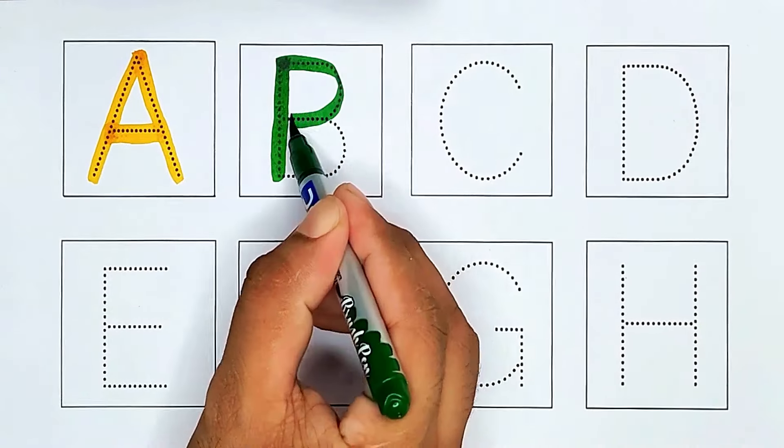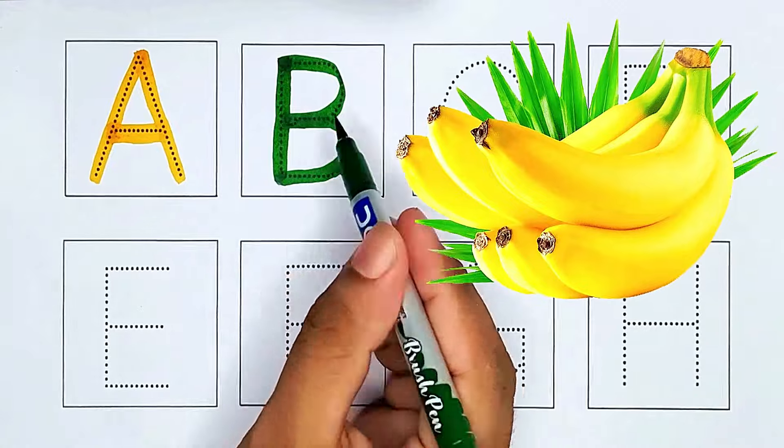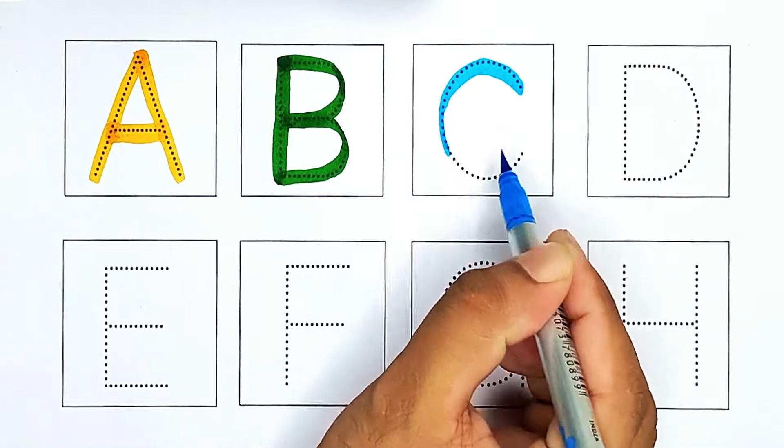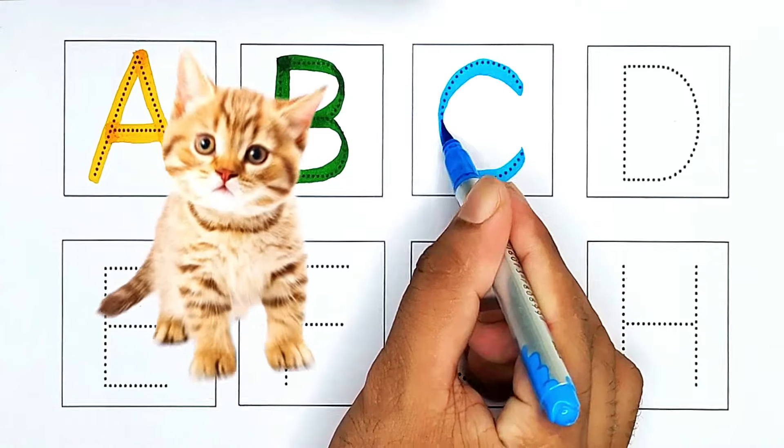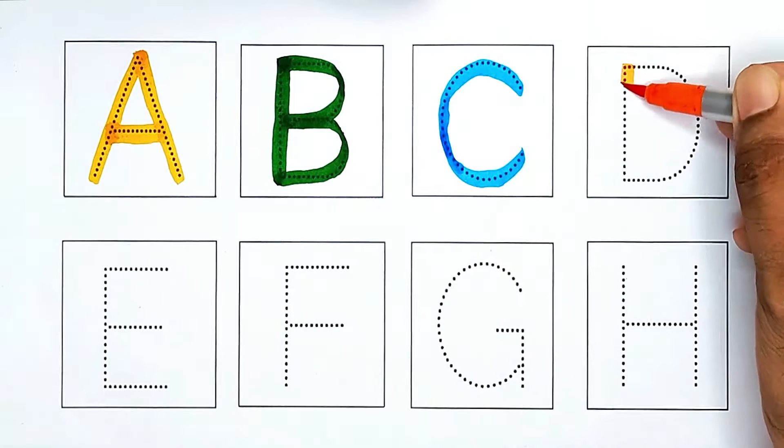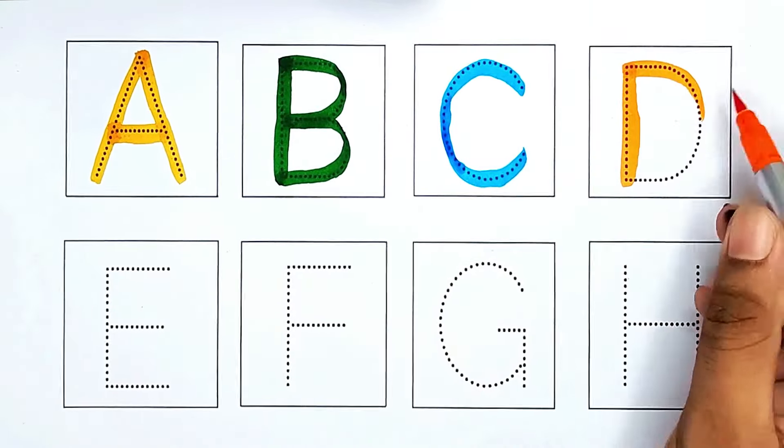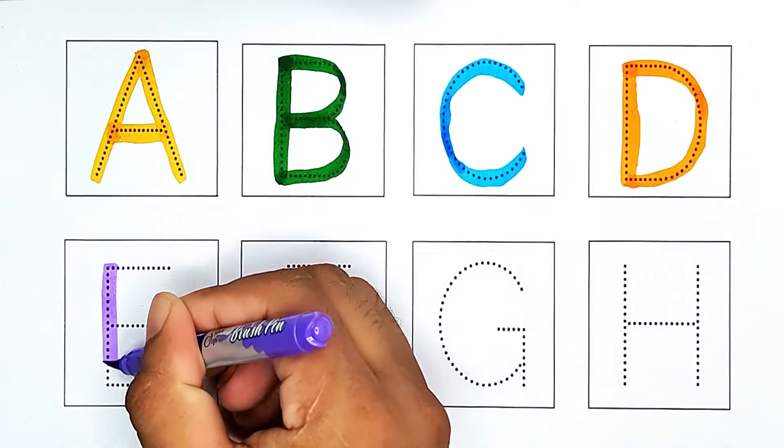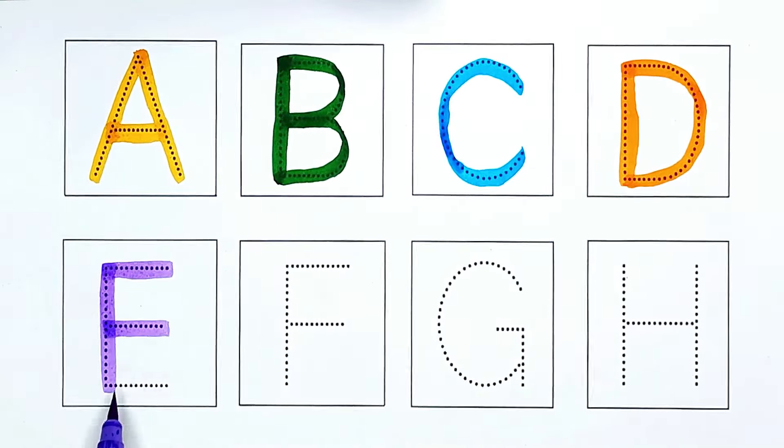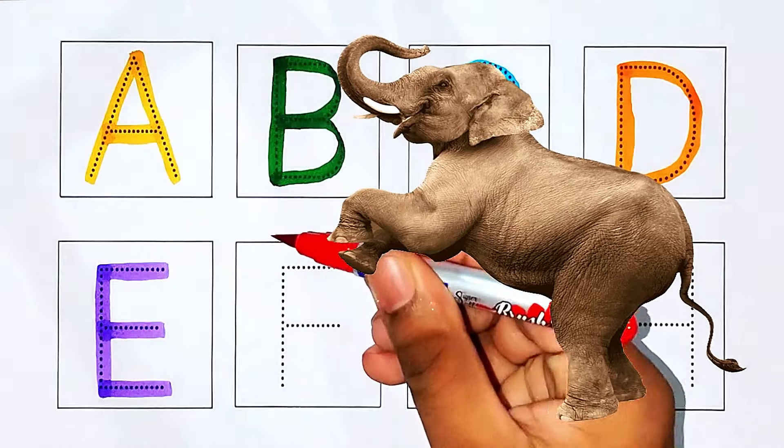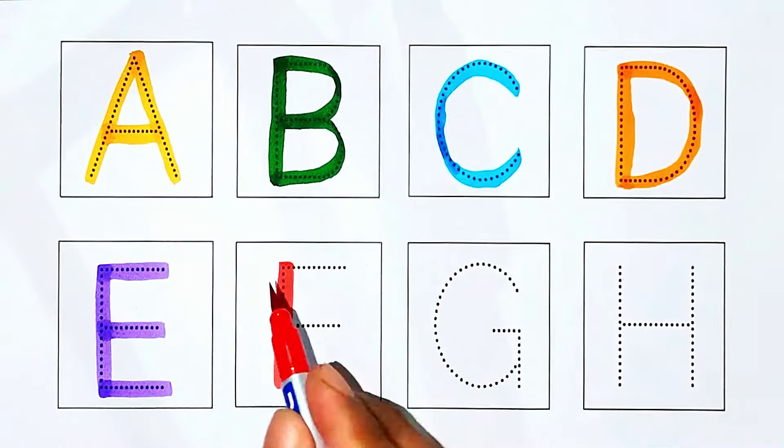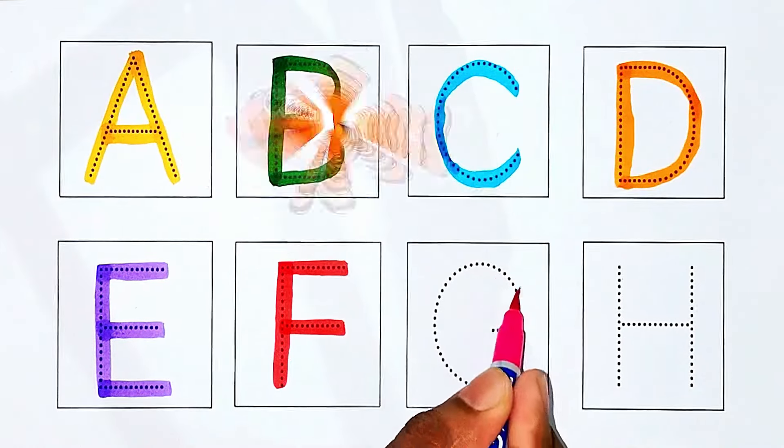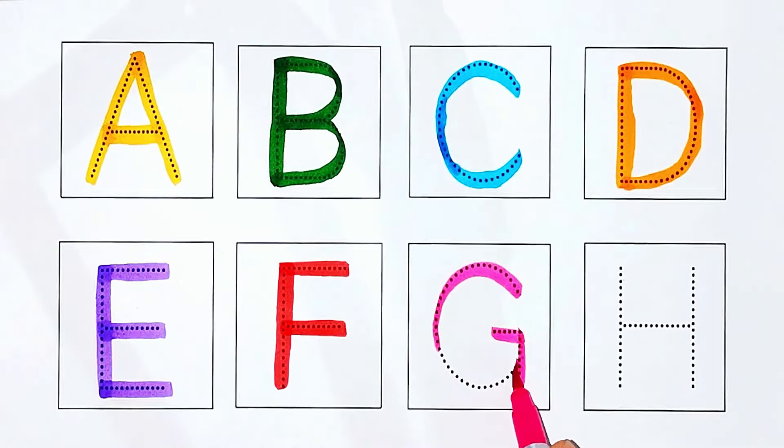C, C for cat. D, D for dog. E, E for elephant. F, F for fish. G, G for gray.